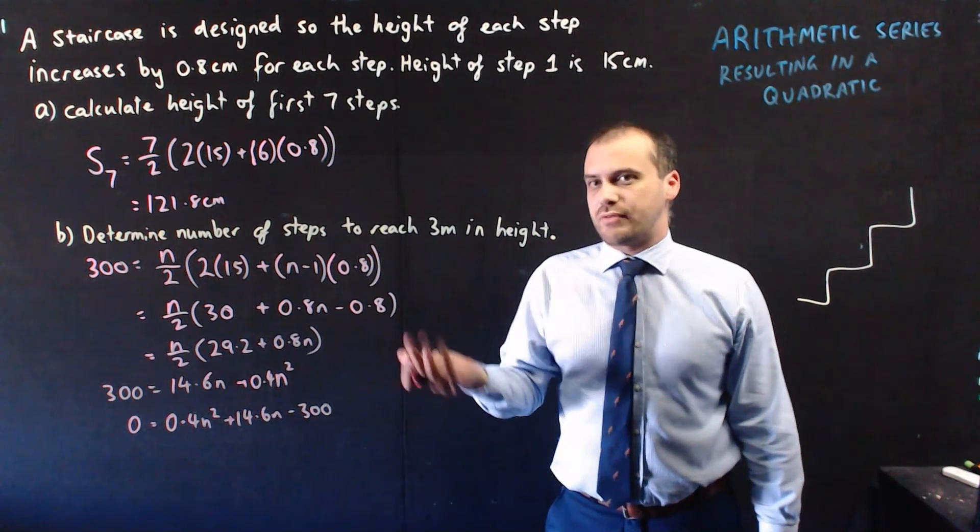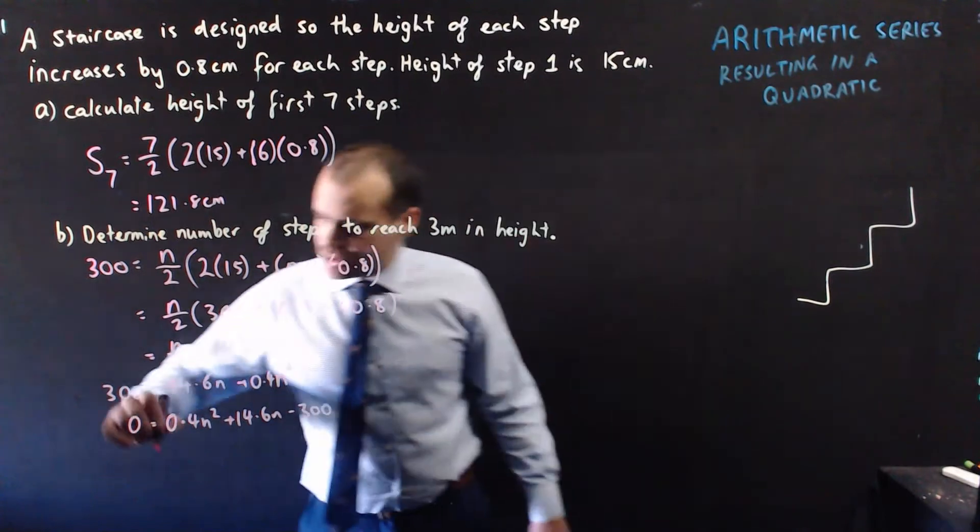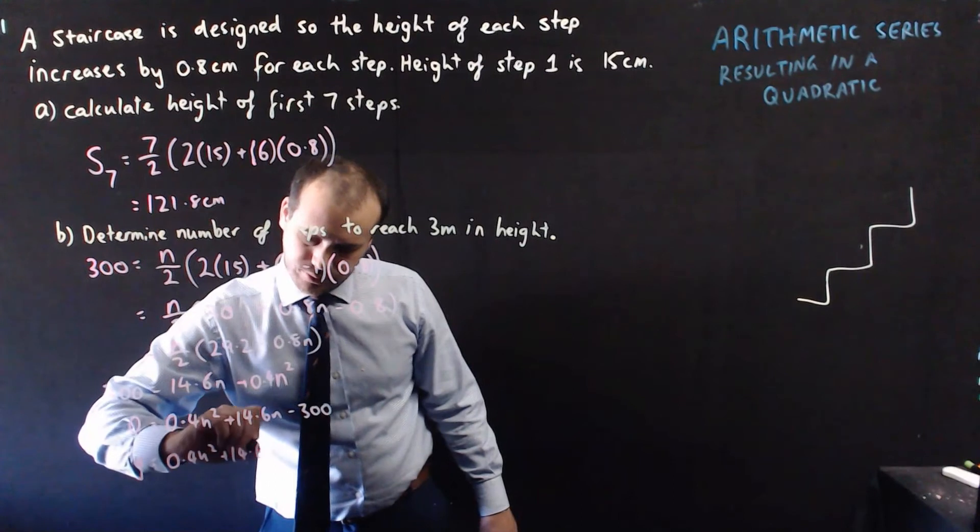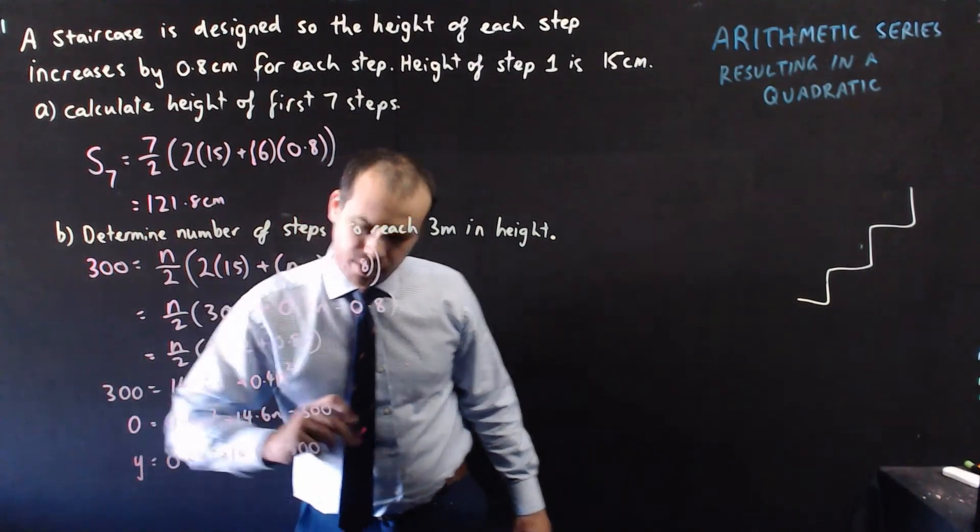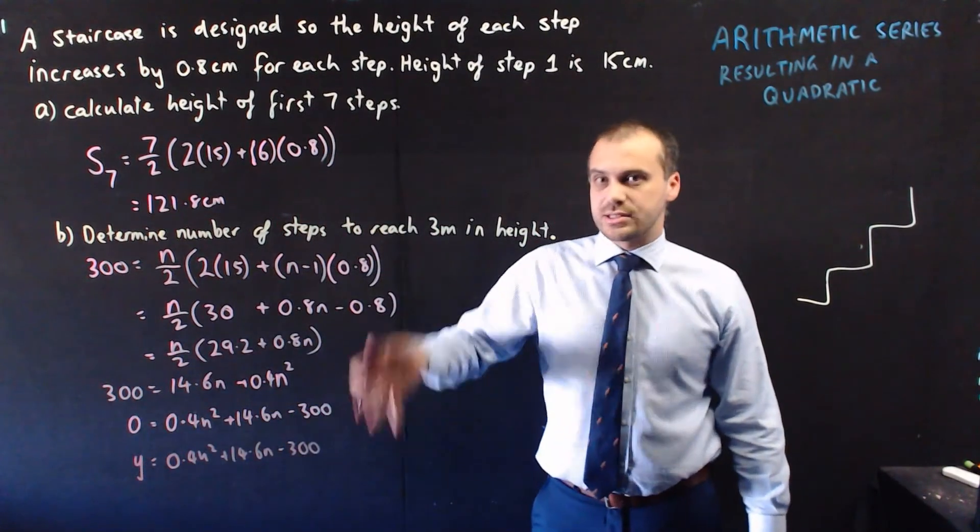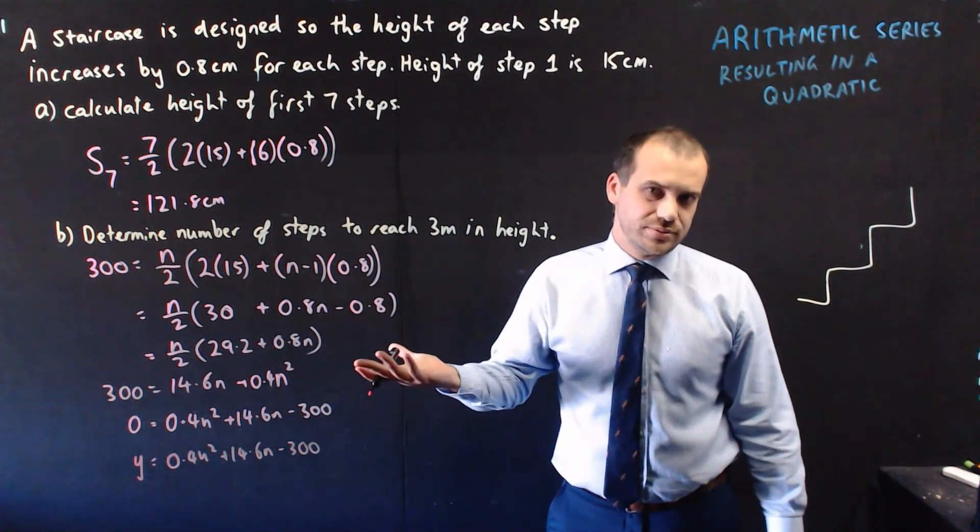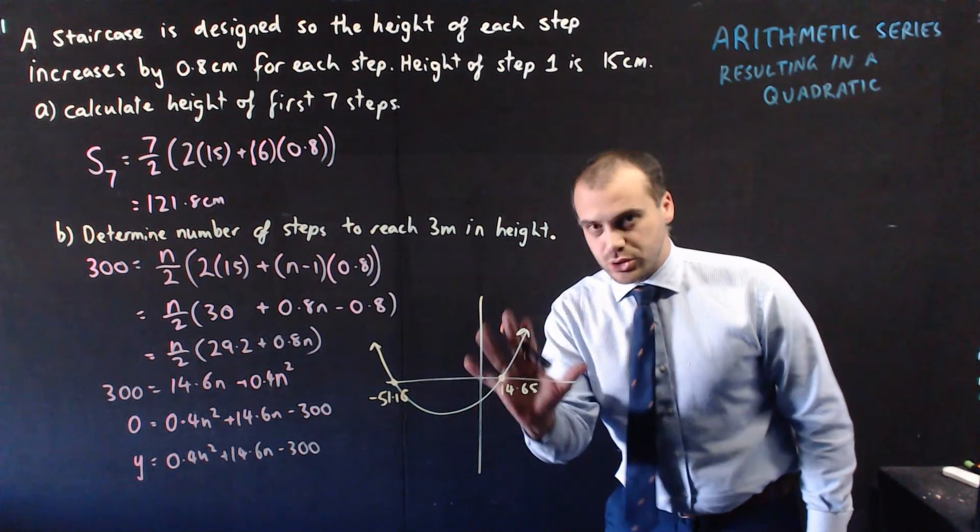You could also graph it, particularly if you've got a graphics calculator available to you. Just type y equals all of this stuff into your calculator, and check to see where it cuts the x-axis, and you're probably going to get two n solutions here.